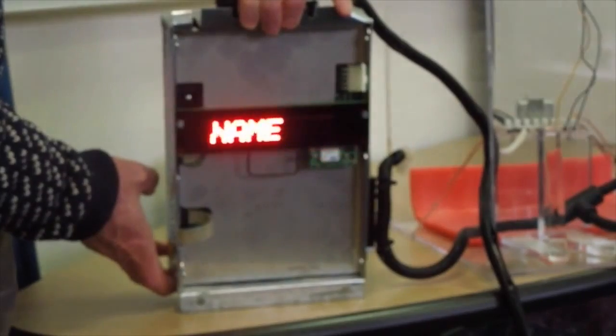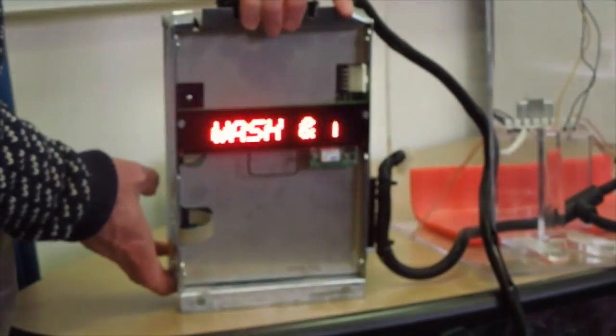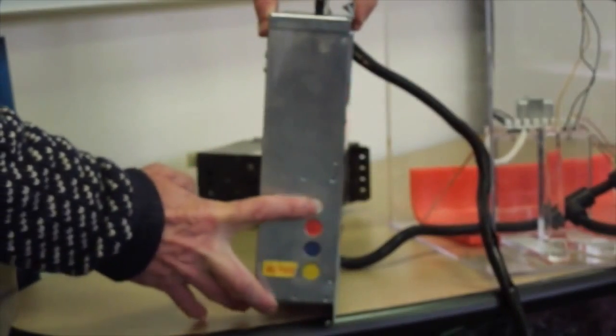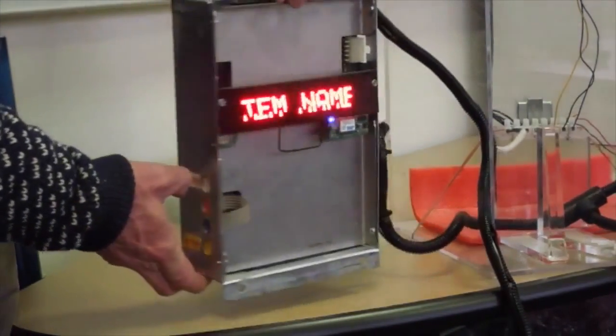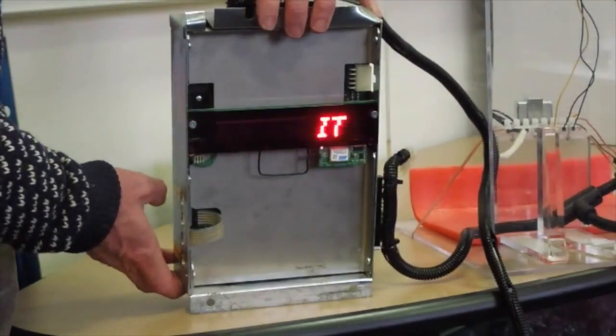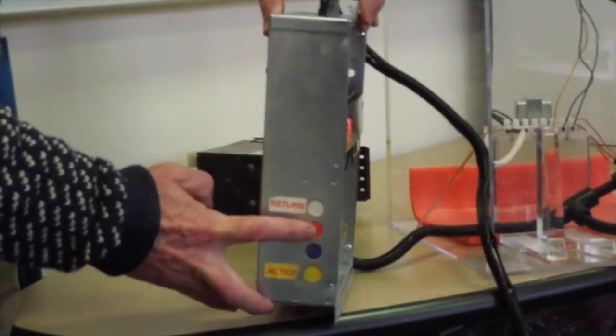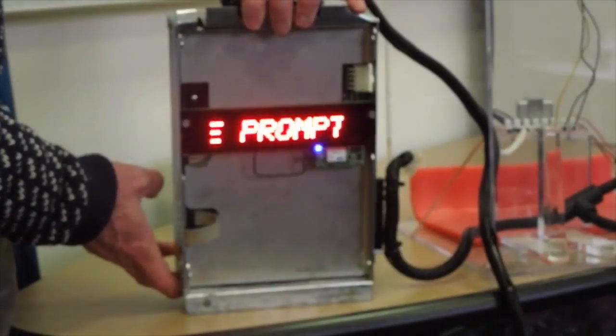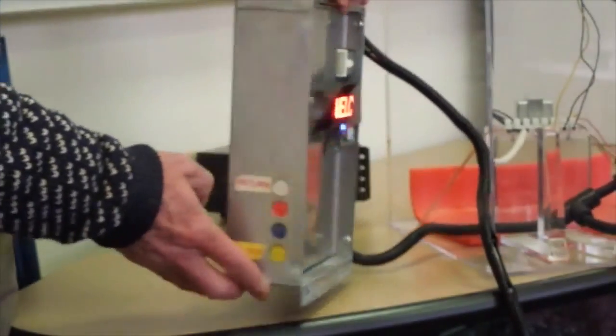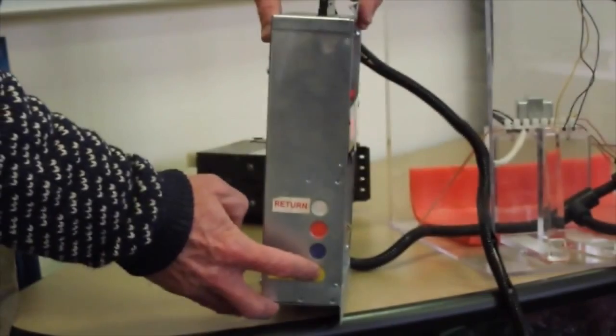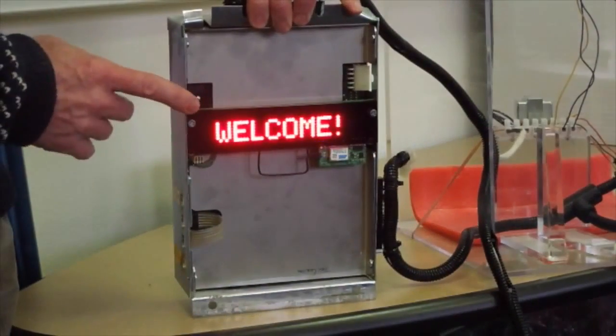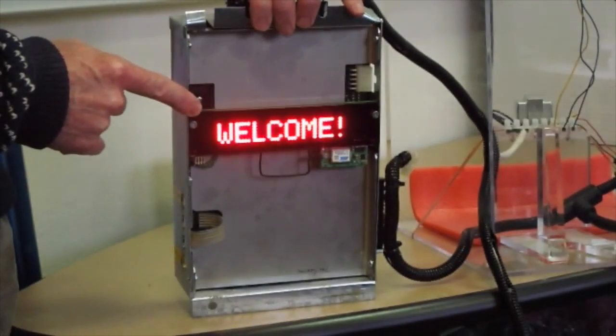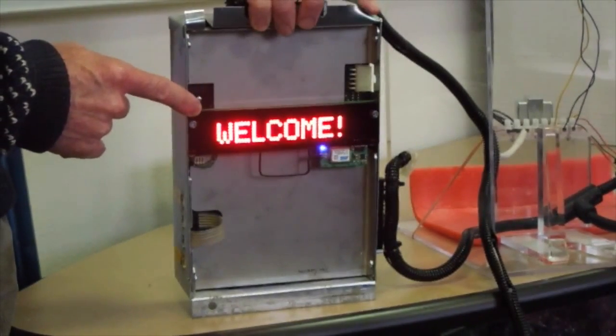So in summary, we have programmed in four unique item prices and four unique item names. Now we're going to press the red button and we're going to program in the welcome prompt. Press the yellow button. The welcome message needs to be the welcome, as you see on the screen here.